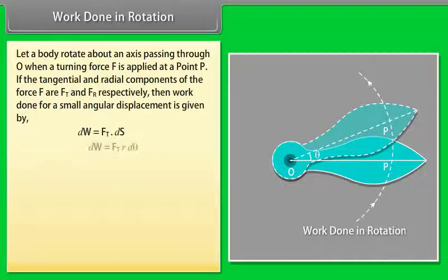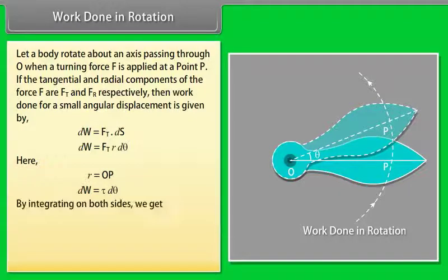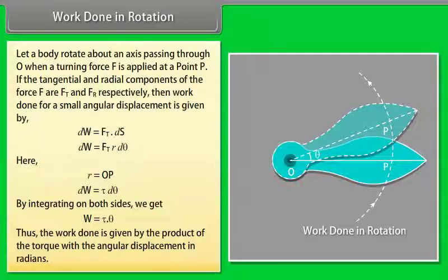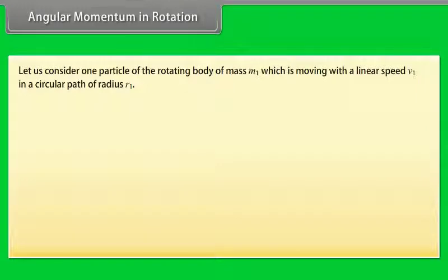Work done in rotation: let a body rotate about an axis through O when a turning force F is applied at point P, with tangential and radial components Ft and Fr. Work done for a small angular displacement is dW = Ft·dS. Substituting dS = r·dθ gives dW = Ft·r·dθ, where r = OP. In terms of torque, dW = τ·dθ. Integrating both sides, W = τ·θ. Thus, work done equals the product of torque and angular displacement in radians.